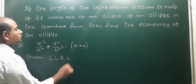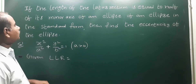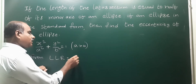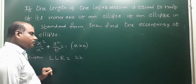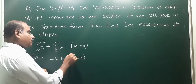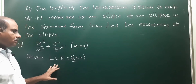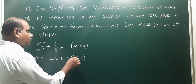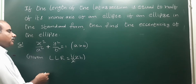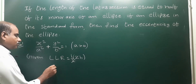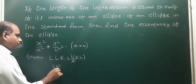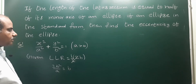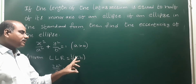So length of latus rectum, LLR, is equal to half of its minor axis. So a greater than b condition. LLR is equal to half of its minor axis — okay, so that means this is the condition. So 2 will cancel out. The LLR formula for a greater than b condition is 2b² by a.